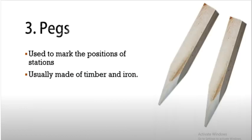Then survey instruments: pegs. Pegs are basically used for the positions of stations. Pegs are generally made of timber or iron. We use timber or bamboo so that it marks the positions of the station. These pegs are used.